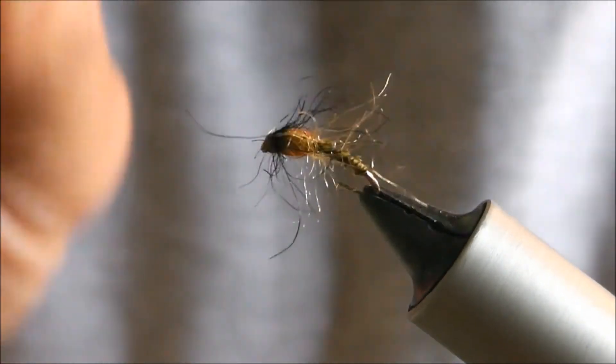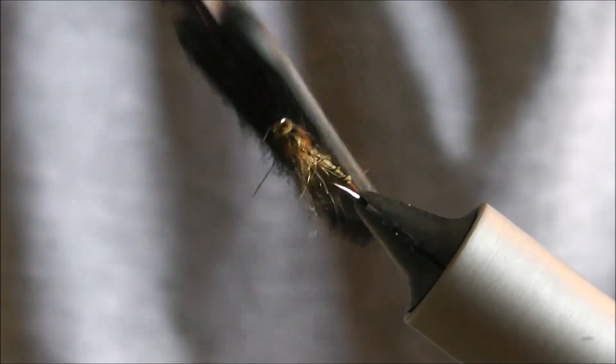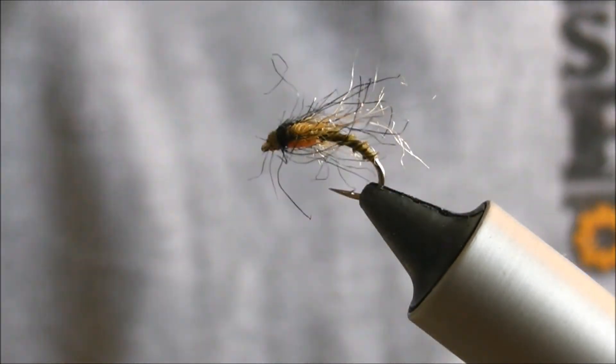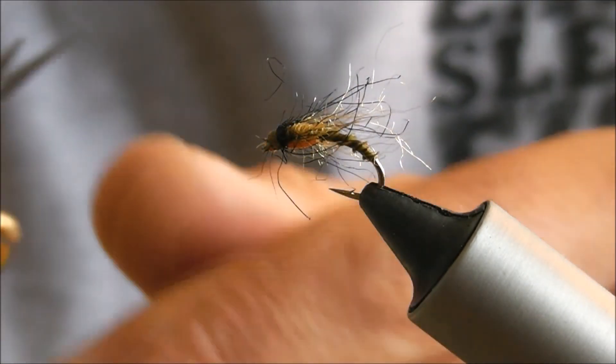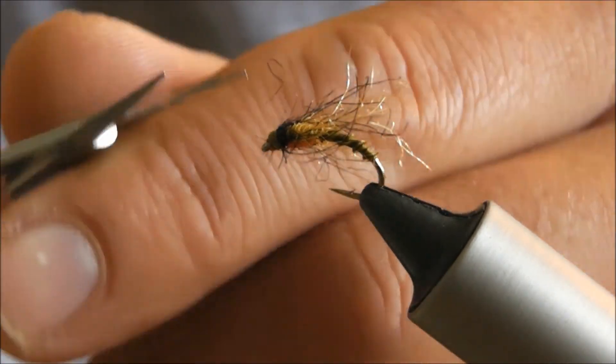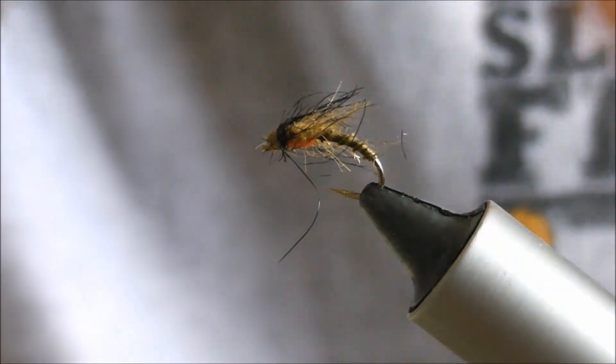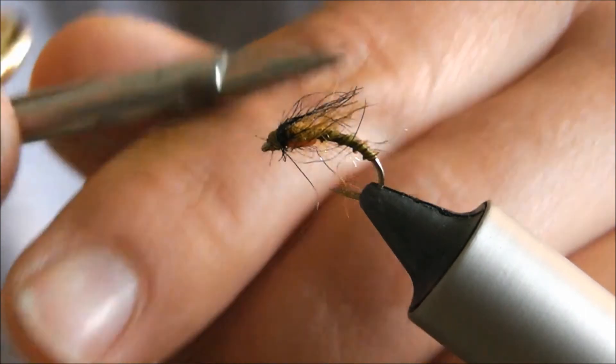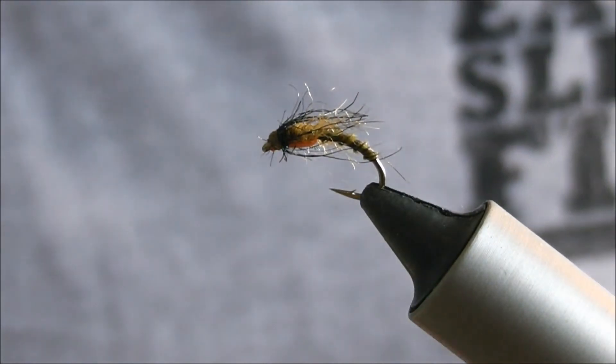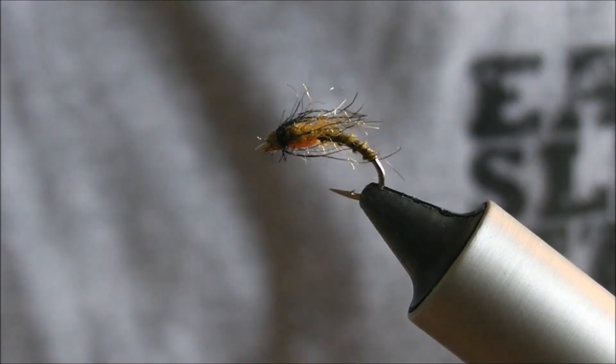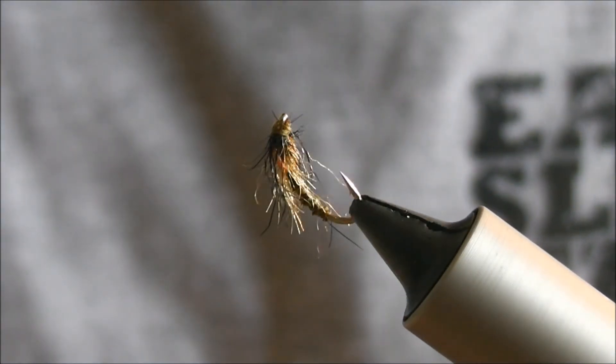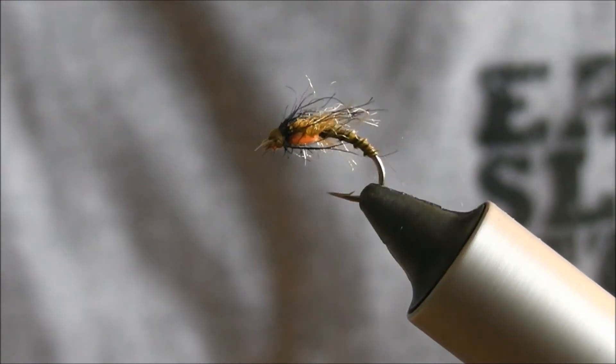Makes it, gives it that real sort of hatching insecty type look. As I said it's going to look a bit like it needs a haircut, so just trim off a few. Hold these back, give them a bit of a trim. Just makes it really leggy. There we are, so that's your scruffy buzzer.